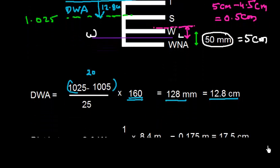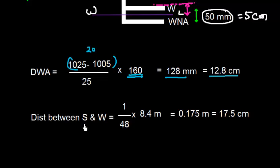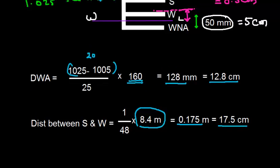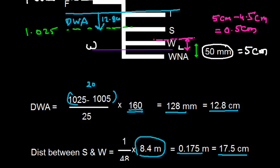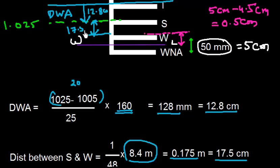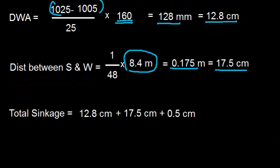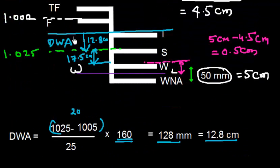The distance between S (Summer) and W (Winter) marks is 1/48 of the summer draft. With a summer draft of 8.4m: 8.4 / 48 = 0.175m = 17.5cm. So on the load line diagram, the distance between S mark and W mark is 17.5cm.